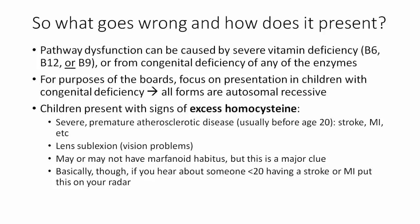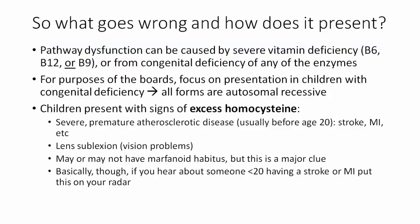How does this pathway go wrong and develop homocysteine excess? Pathway dysfunction can be caused by a severe vitamin deficiency — the right-sided pathway is dependent on B6, while the left is dependent on B12 or B9. More commonly, it's from a congenital deficiency of any of the enzymes involved, meaning people are born without those enzymes functioning. For boards, we're going to focus on the presentation in children who have a congenital loss of one of these enzymes, and when these occur, they're all autosomal recessive.